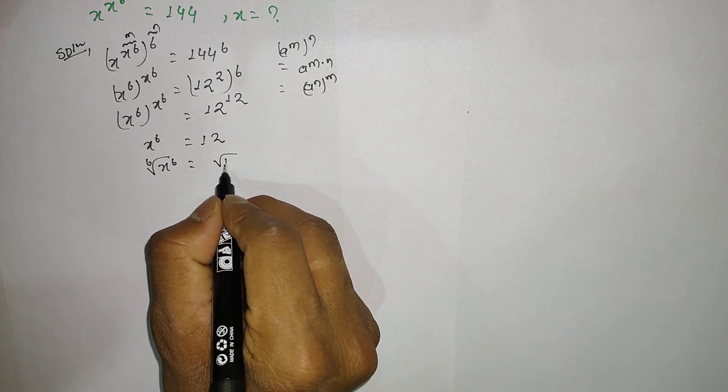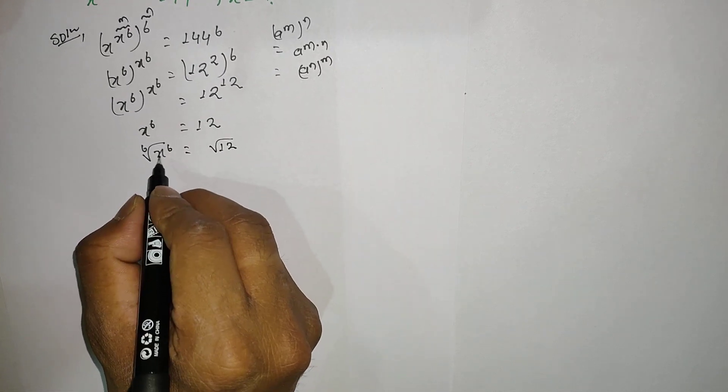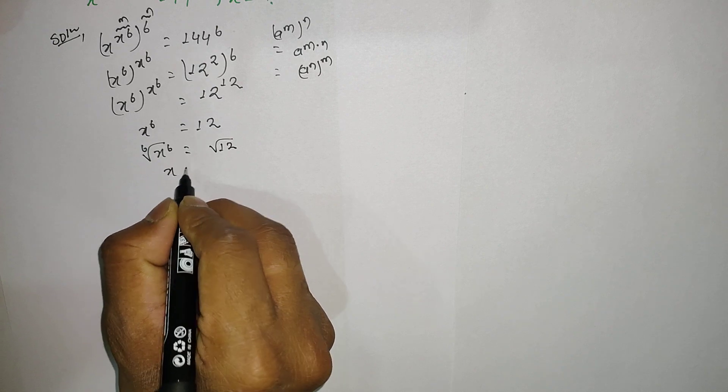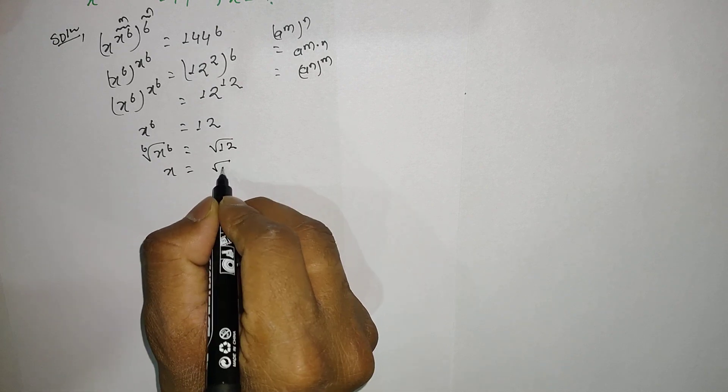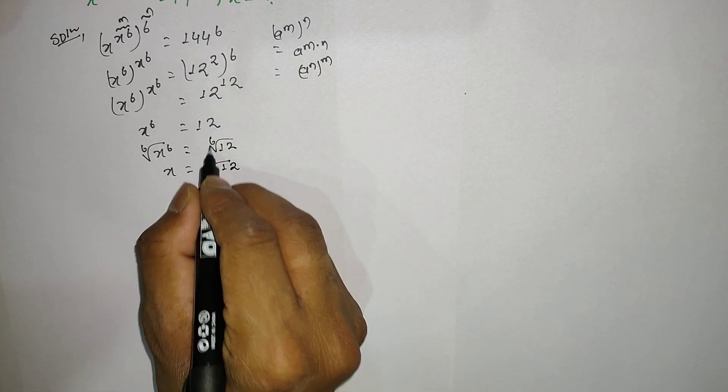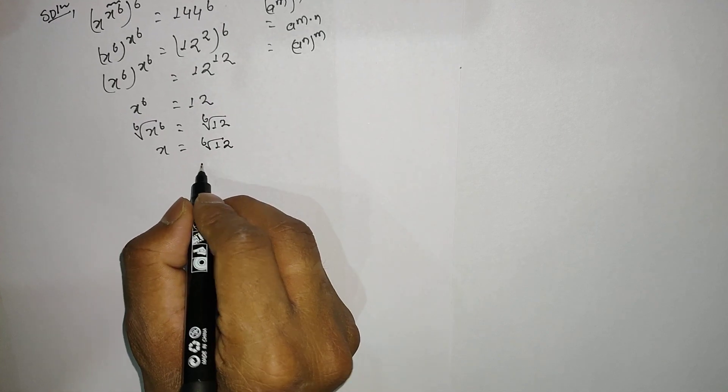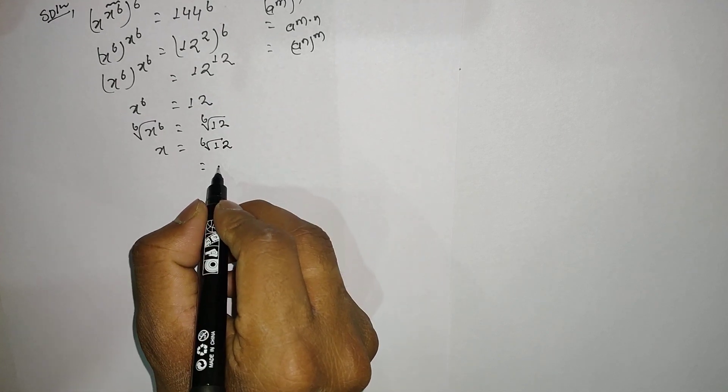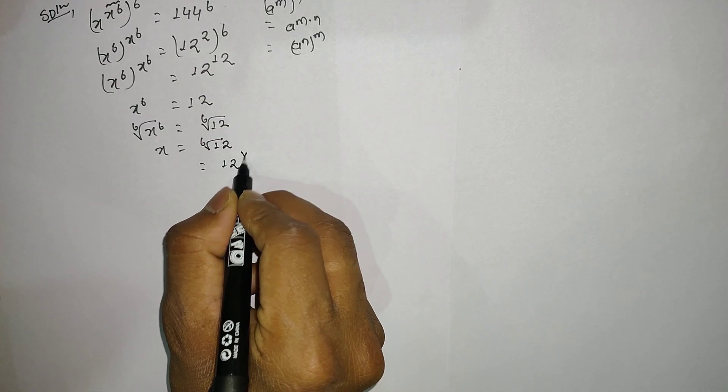...then we can get the value of x. Here x equals the 6th root of 12, and the 6th root of 12 can also be written as 12 power 1 by 6.